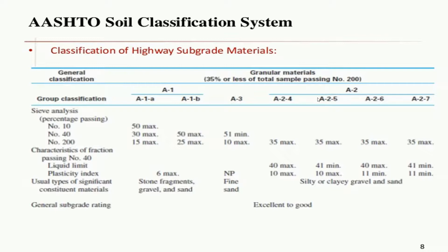Here you can see the chart provided by AASHTO, which shows the various classifications of soil in groups A1 to A8, including various sieve analysis parameters, characterization of fractions, and usual types of significant constituent materials. We can also grade the material by general subgrade rating as excellent to good. This classification of subgrade material plays an important role and is useful to find out the various chemical and physical properties of the soil.